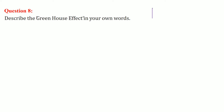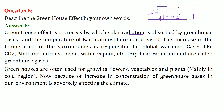A greenhouse is a concept used in upper latitudes where the weather is always cold. In order to grow vegetables, people create a greenhouse — a box or house that remains warm — so that plants and flowers can grow. This same scenario is now happening on our globe. The greenhouse effect is a process by which solar radiation is absorbed by greenhouse gases and the temperature of Earth's atmosphere increases, leading to global warming. Gases like CO₂, methane, nitrous oxide, and water vapor trap heat radiation from the sun.